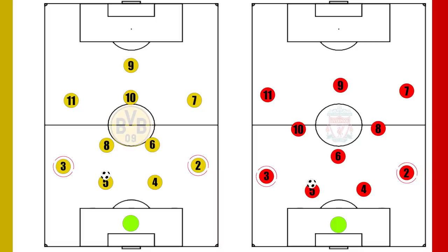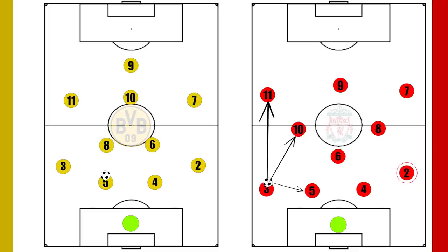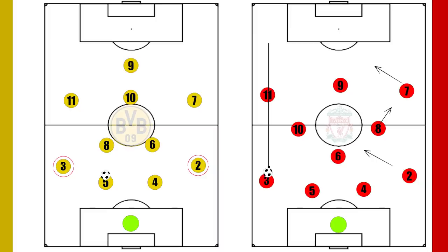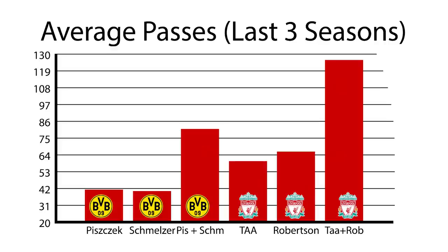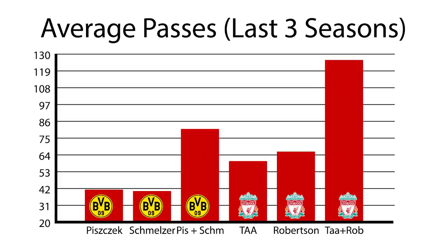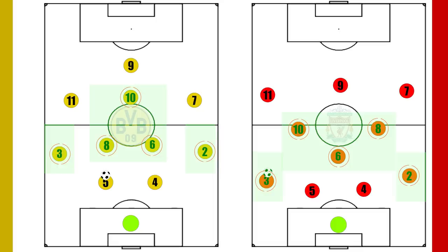The behaviour and roles of the fullbacks is another major difference. From deep, Liverpool's fullbacks are an active part of the build-up play and may start deep to help rotate the ball around the pitch. Alexander-Arnold is particularly key to this and occasionally tucks into midfield. This is in contrast to Piszczek and Schmelzer, who operate much more like traditional fullbacks, looking to immediately provide width and off-the-ball movement. The stats bear this out: the Liverpool pairing completes on average around 20 more passes each per game.